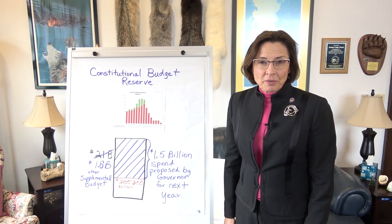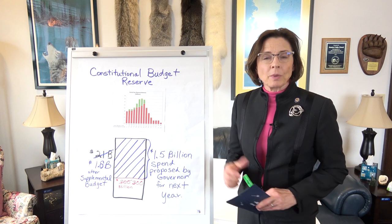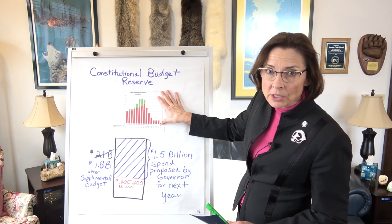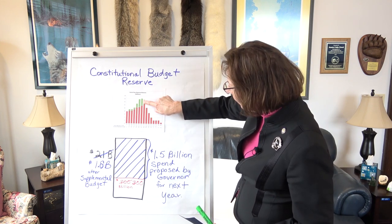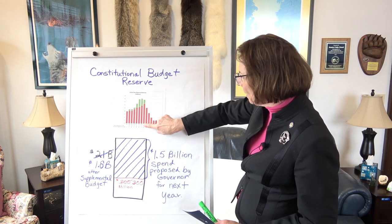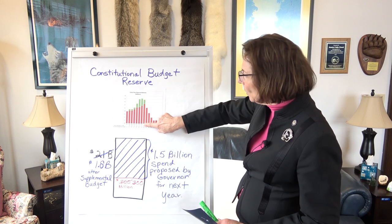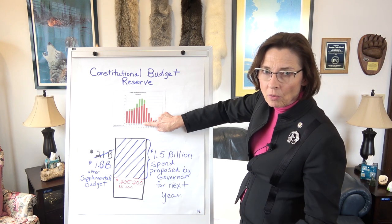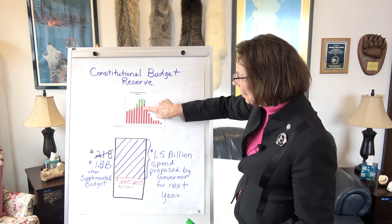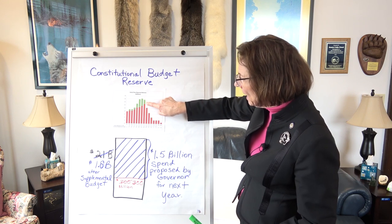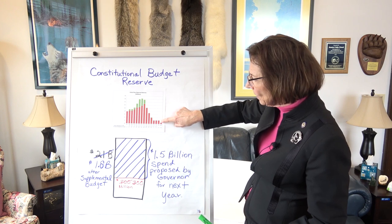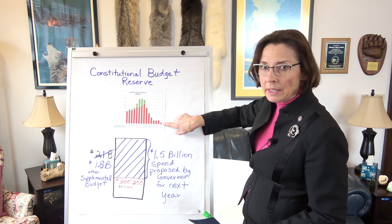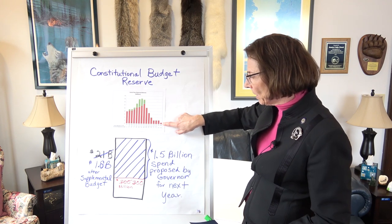Back to that Constitutional Budget Reserve. The fact is we need to repay that — we've used money out of it. I want you to see what that savings account spending has been looking like. This tallest bar here of spending from the CBR was in fiscal year 13. It was at this point that the price of oil began to fall. And you can see we continued to have to spend out of the CBR until — look how tiny it is right there. This is actually about where we're at right now, this tiny amount left in our CBR, our savings account.